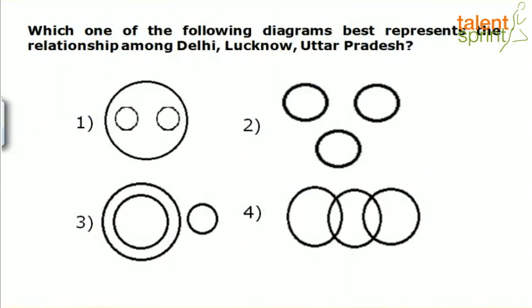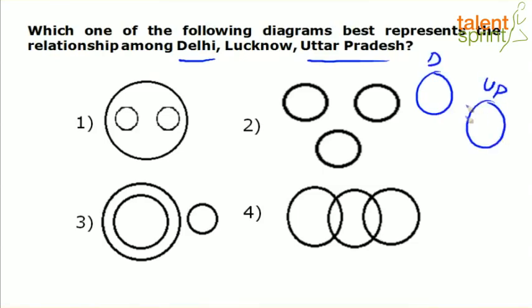Next question: which one of the following diagrams best represents the relationship among Delhi, Lucknow and Uttar Pradesh? Delhi and Uttar Pradesh are two different states, so we have two separate circles representing them — they are disjoint sets with no overlapping. Now Lucknow is the capital of Uttar Pradesh and is a city within it. That's why general knowledge is required — you should at least know that Lucknow is a part of Uttar Pradesh.